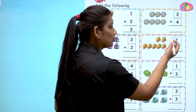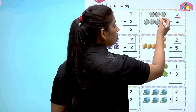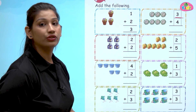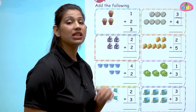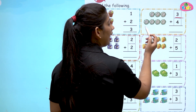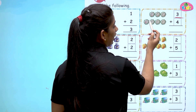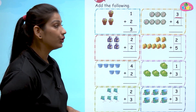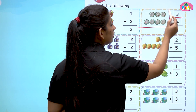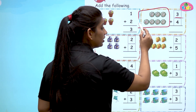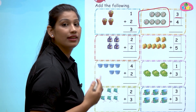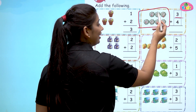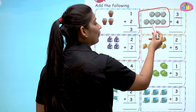Let us start doing the concept. Here we have number three and three cauliflowers — one, two, three. Now we have number four. Three plus four — we have to plus four with number three, and there are four cauliflowers — one, two, three, four.